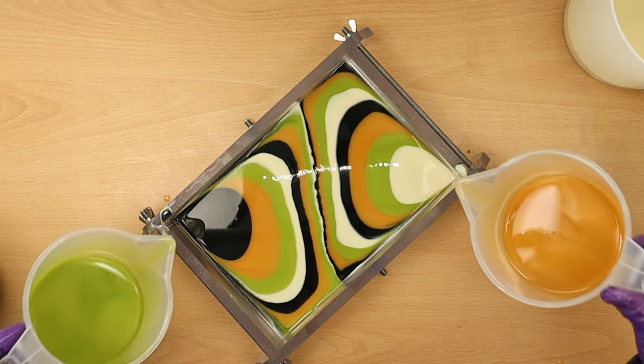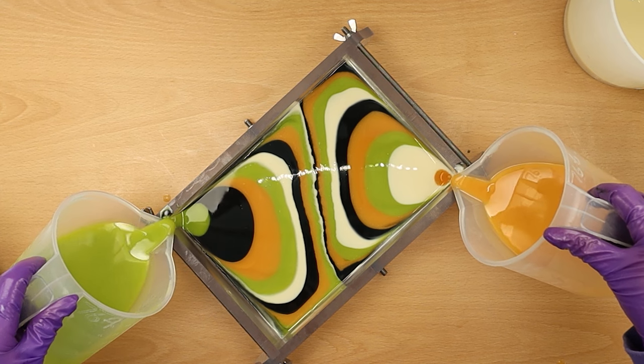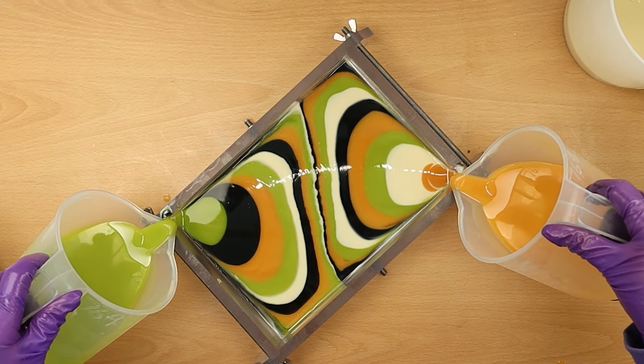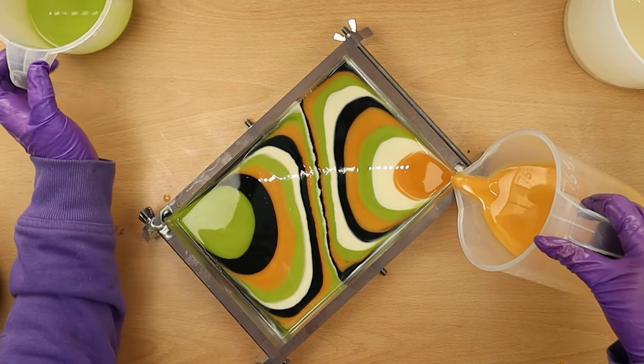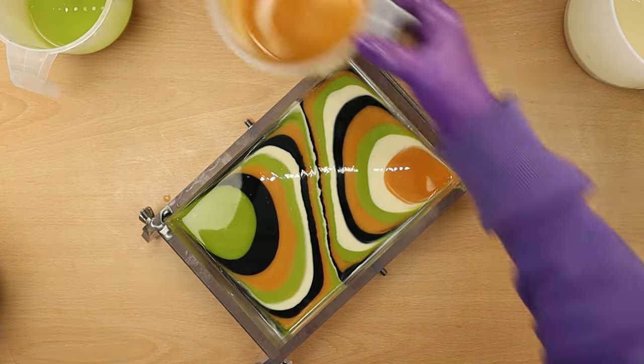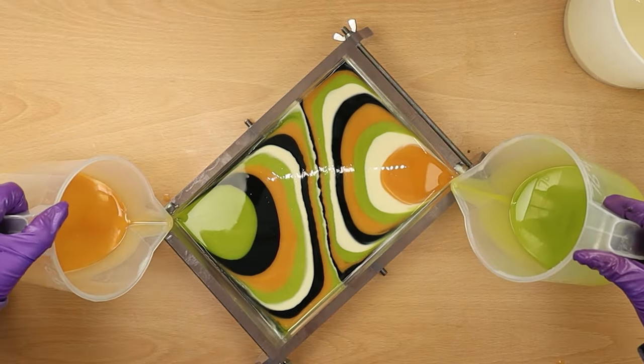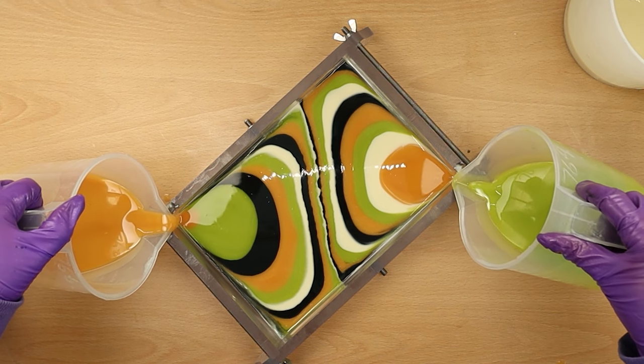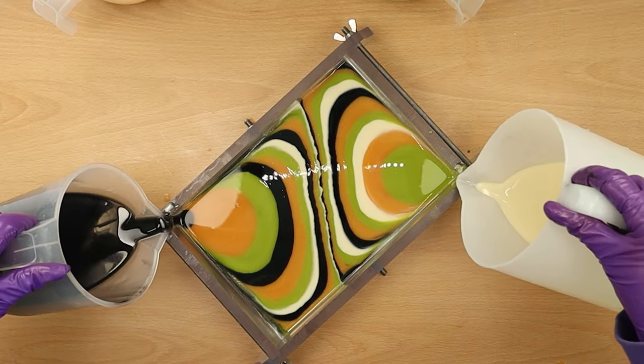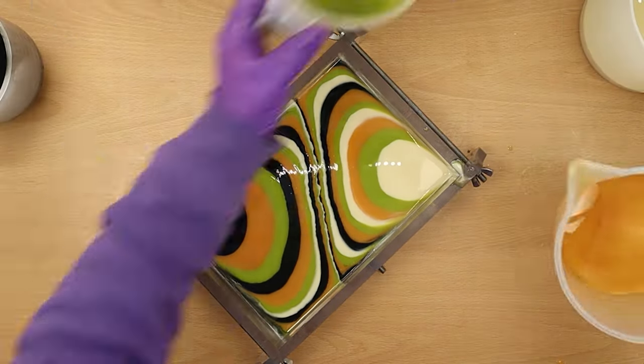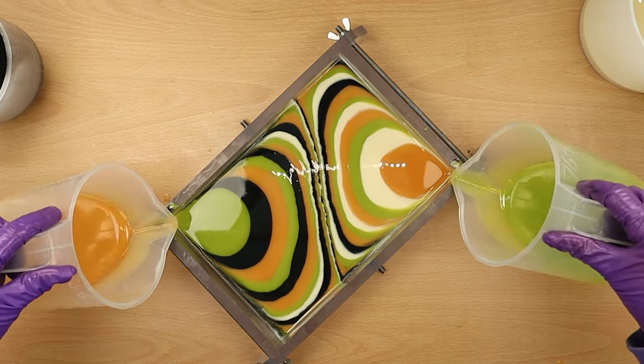I think with this pour it doesn't really matter how you pour it. I've seen people do a kiss pour, I've seen people just randomly putting it in the mold, I've seen people do little blobs all over the place. Pouring from the corner seems to be a pretty common one.